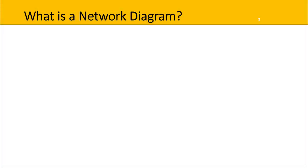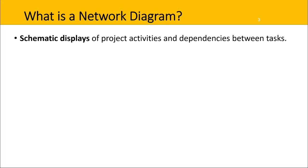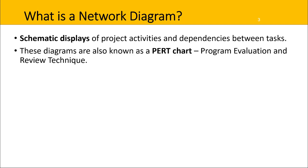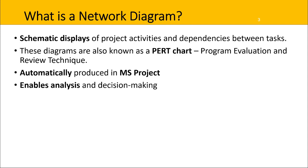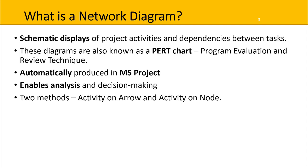First, what is a network diagram? It's a schematic display of project activities and dependencies between project tasks. These diagrams are also known as a PERT chart, or Program Evaluation and Review Technique, and they're automatically produced in Microsoft Project. This enables detailed analysis and decision making. There are two methods: one is activity on arrow, and the second is activity on node.